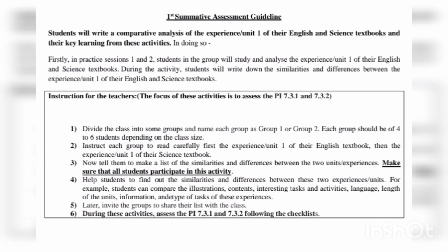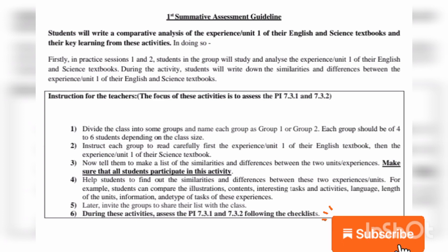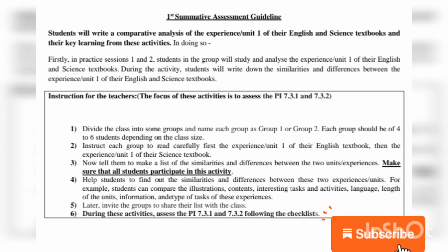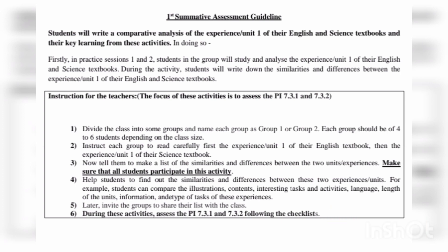During the activity, students will write down the similarities and differences or dissimilarities between Unit 1 of their English and Science textbooks. Students will first study both textbook units and list down the similarities and differences between them.